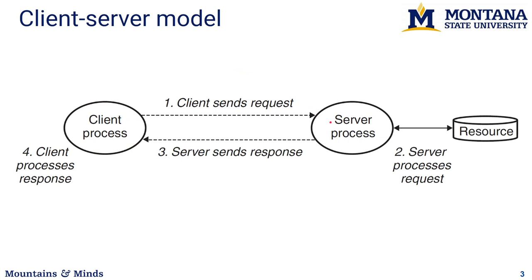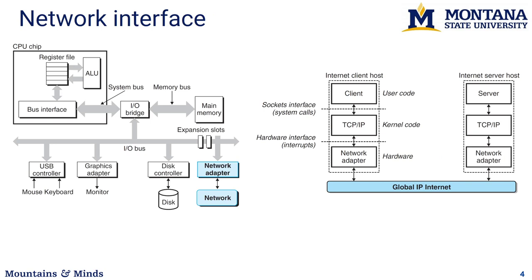Inside your computer, you have your CPU, an IO bridge that connects to main memory, and an IO bus connecting all the peripherals. One of those peripherals is a network adapter, connected to a network via ethernet or a wireless link such as Wi-Fi or cellular. Internally, your network application runs user code at the application layer that uses sockets.